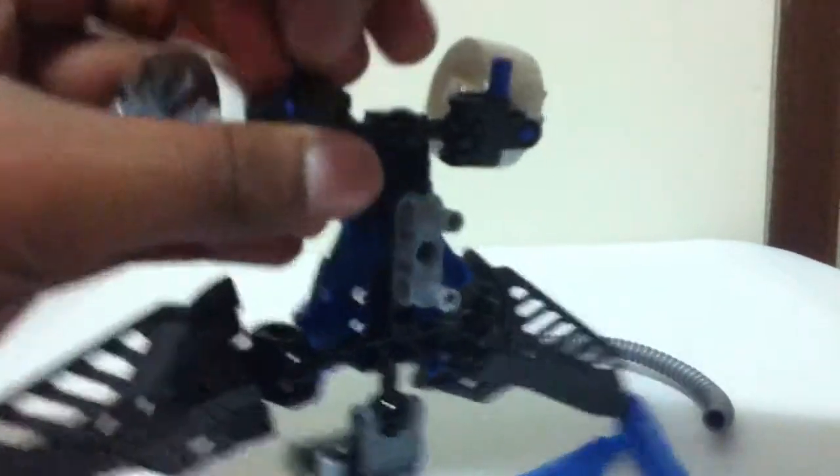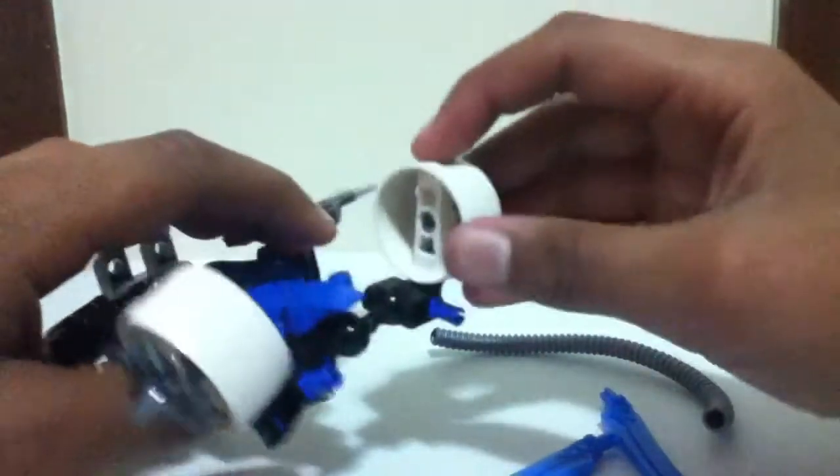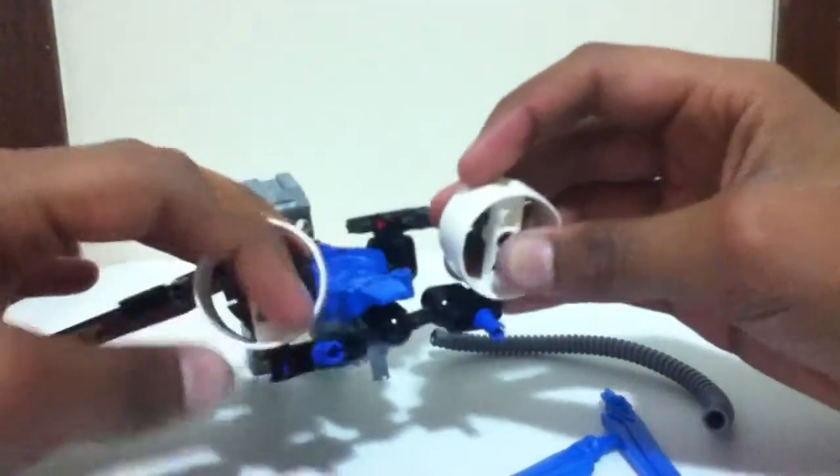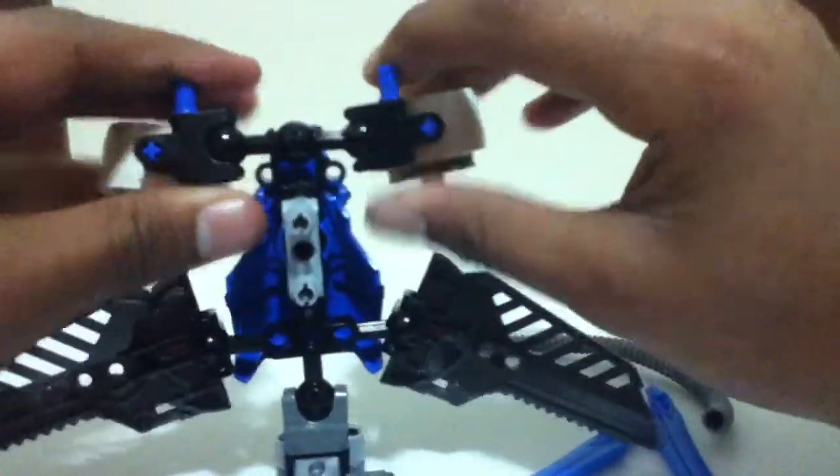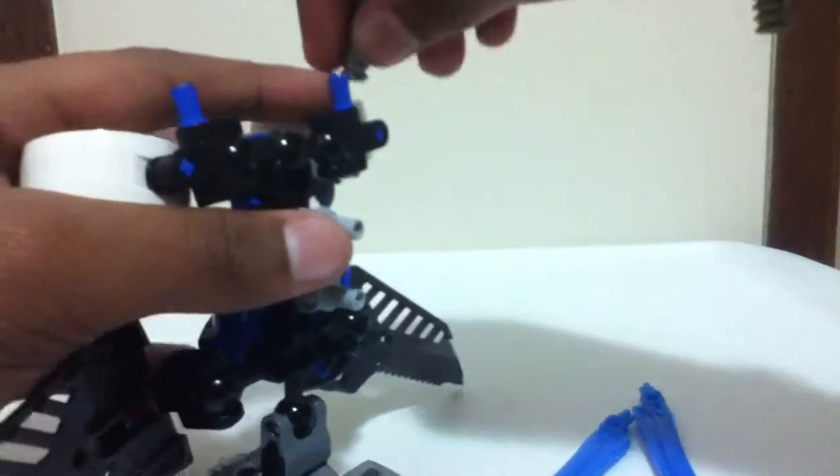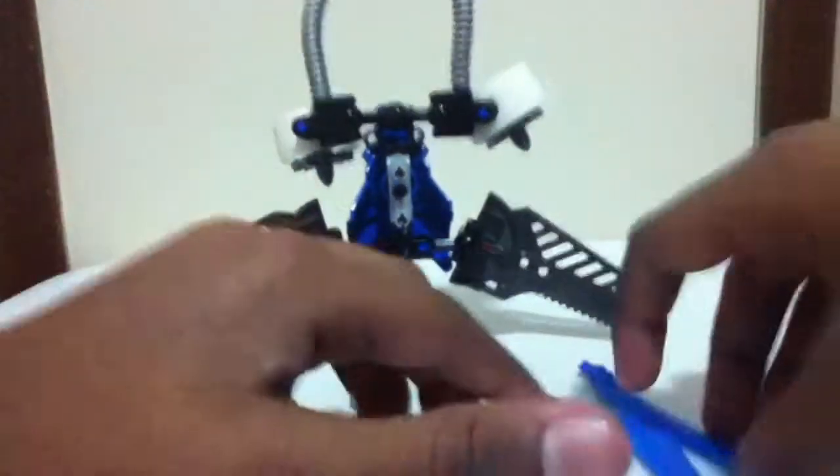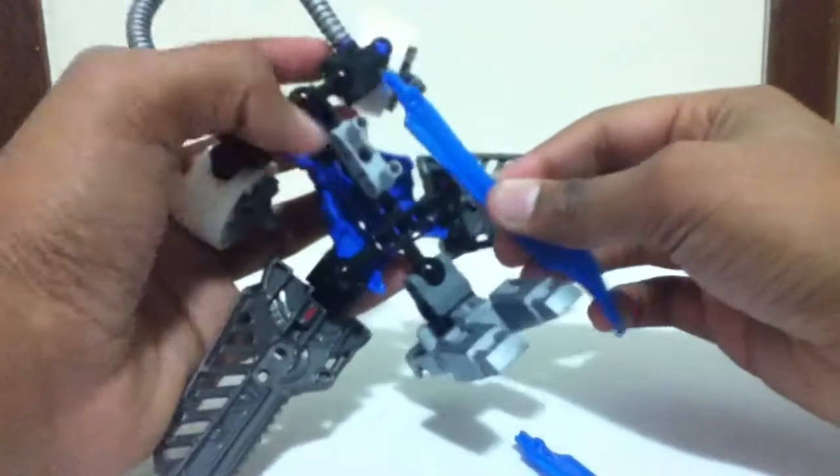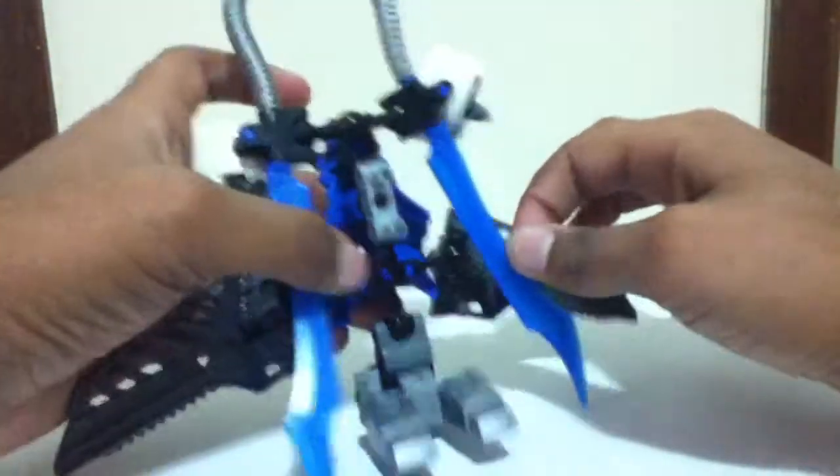So you should have something that looks like that, so that the turbines are kind of facing outward, or backwards, or frontwards, or whatever. And you want those two half axle, half pins right there on the top, and you're just going to attach this gray hose piece thingy onto those pins, so that you have that. And the last step is to take these blue swords and attach them to the bottom, so that you have that.